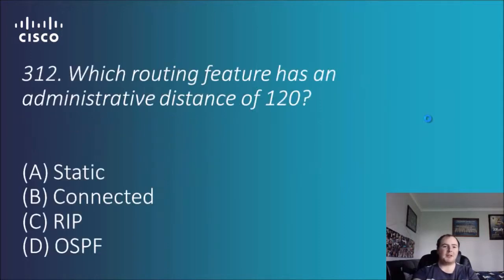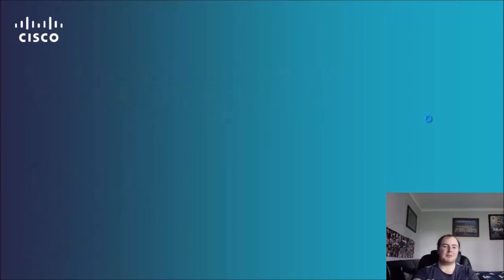Nice simple one there. And plenty of these are just numbers-related. Question 312: which routing feature has an administrative distance of 120? The options are static, connected, RIP, or OSPF. As we just covered, it is RIP.